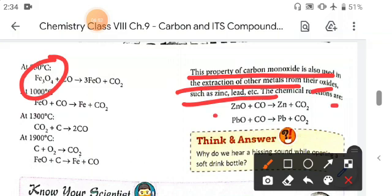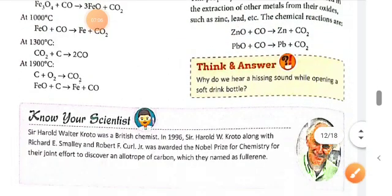The chemical reactions are here: zinc oxide reacts with carbon monoxide to form carbon dioxide and zinc. Like same, PbO, that is lead oxide, reacts with CO to form lead and CO2 is generated.